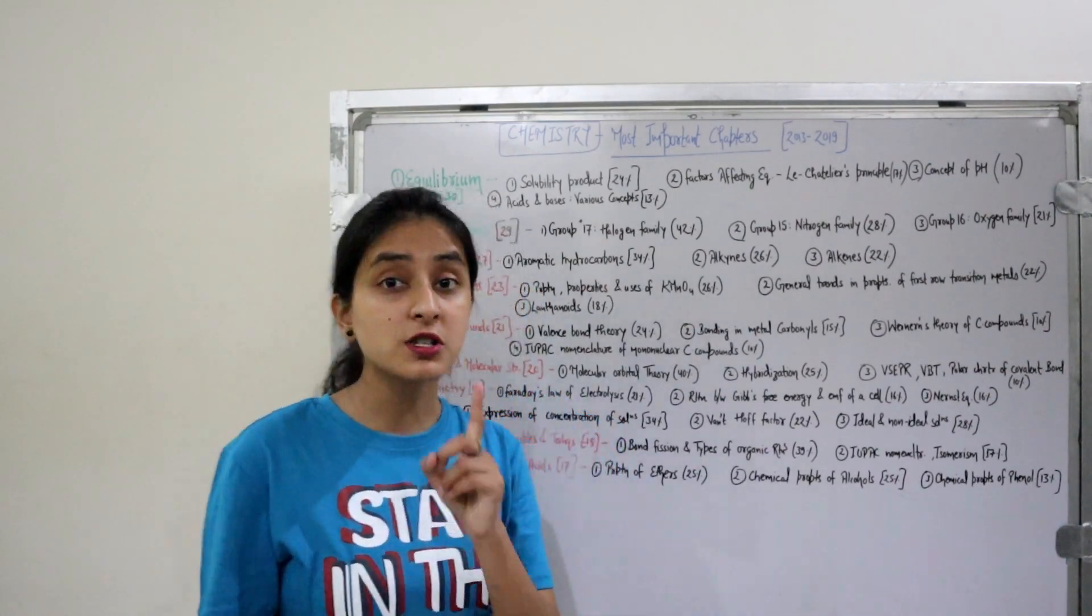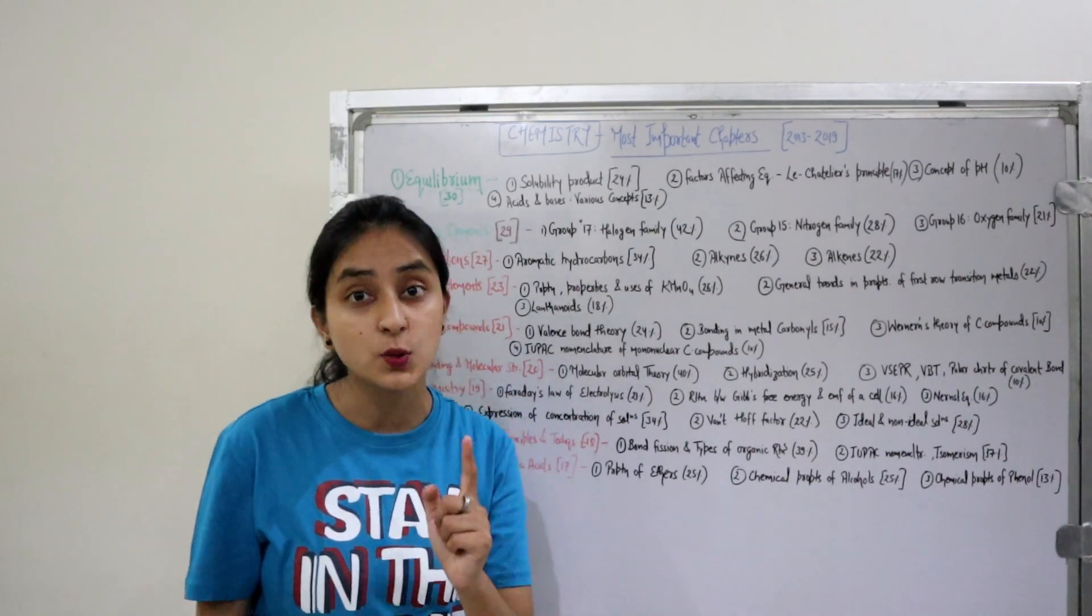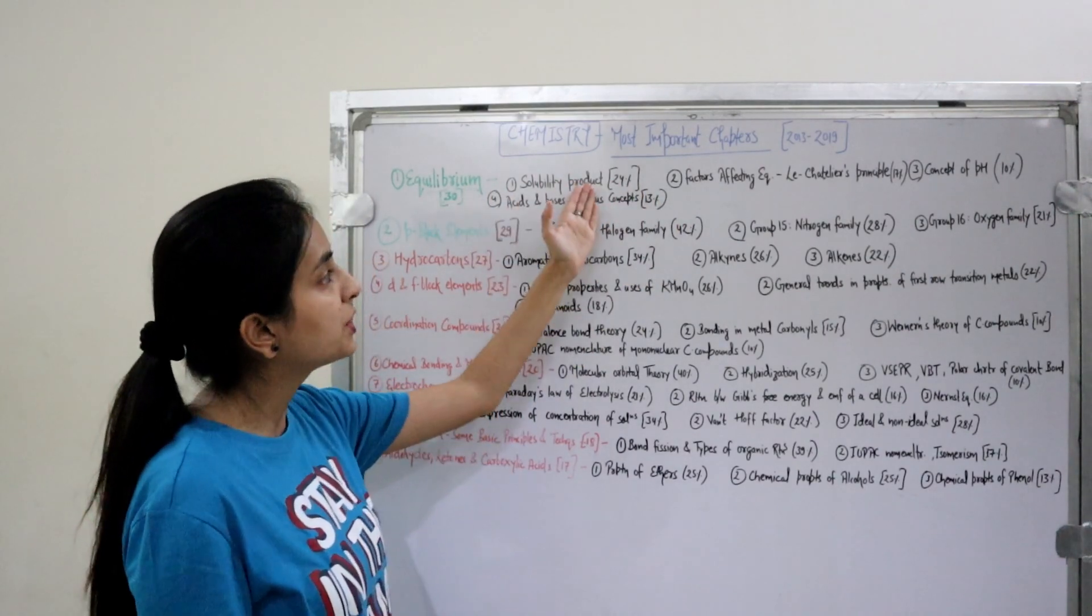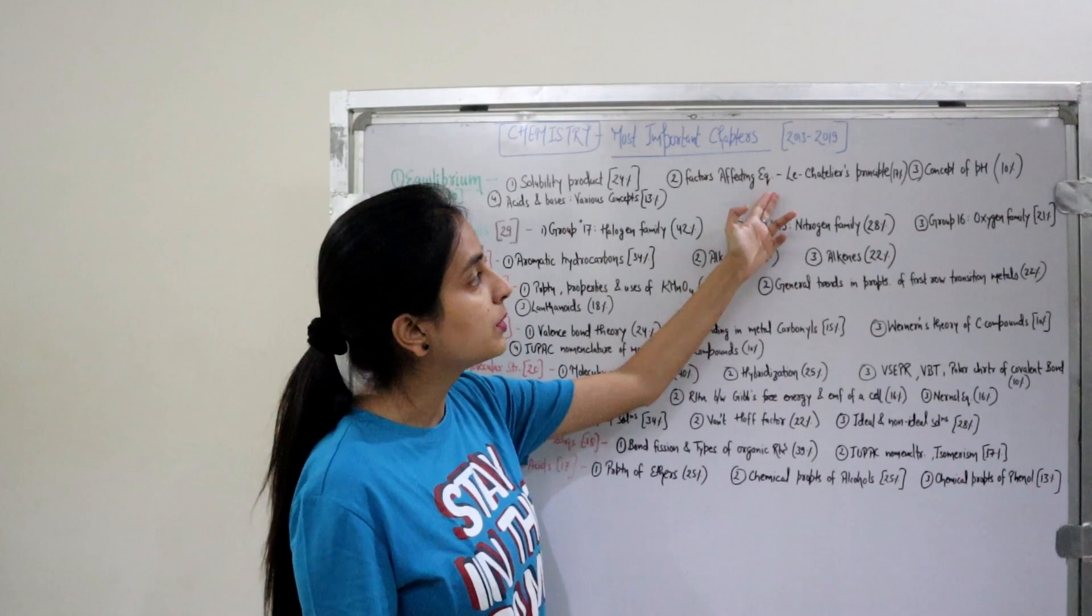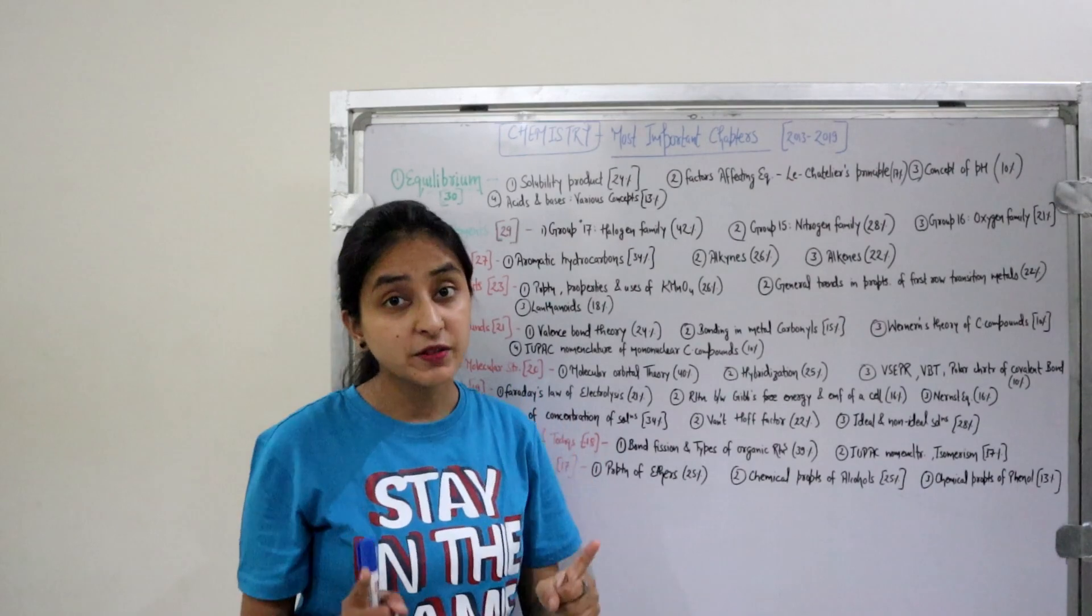Starting with the first most important chapter for NEET: Equilibrium. In the past 7 years, there are 30 questions from this chapter. Most important topics: Solubility Product (24% questions), Factors Affecting Equilibrium, Le Chatelier's Principle, Concept of pH, Acids and Bases, and various other concepts.